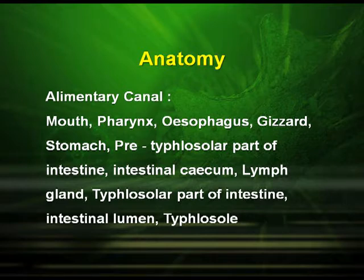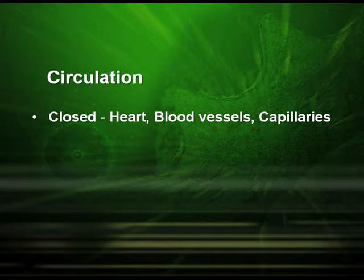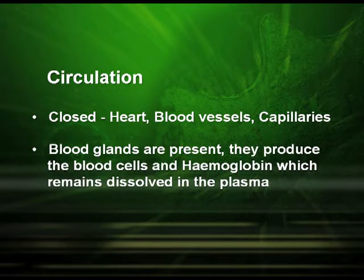The alimentary canal continues with the pre-typhlosolar part of intestine, intestinal caecum, lymph gland, the typhlosolar part of intestine, the intestinal lumen, and the typhlosole. Regarding the circulatory system, they have a closed circulatory system which consists of the heart, the blood vessels, and the capillaries. Blood glands are present in them and they produce blood cells and hemoglobin which remain dissolved in the plasma.